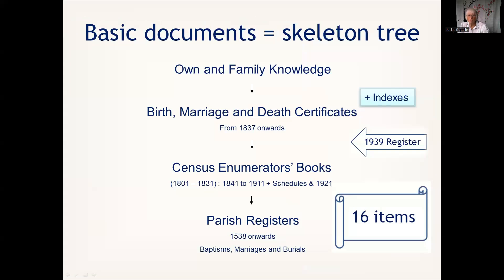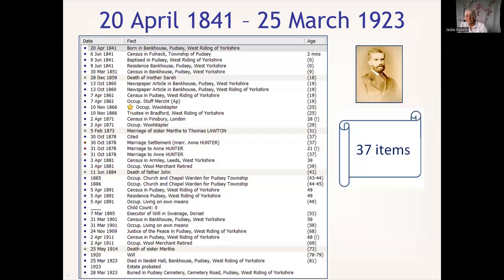Our basic documents put together our skeleton tree, and if we fully research all those about the person, we can see there are 16 items to discover. Maybe they all take place in the same place, which they do mainly for the person I'm focusing on, but not absolutely. I've recorded 27 items for this person - you can see the dates 1841 to 1923, which very nicely captures all the censuses available - but most of them do take place in one place.